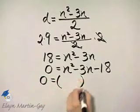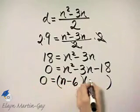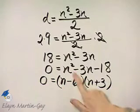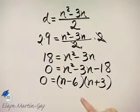It factors as N minus 6 times N plus 3. That's N squared. 3N minus 6N is negative 3N, and then last times last. Yes, that's right.